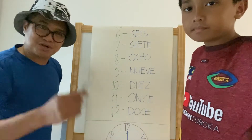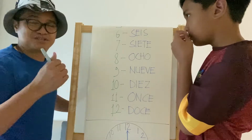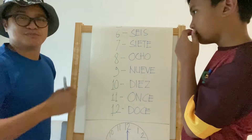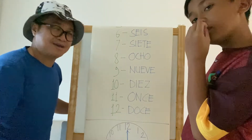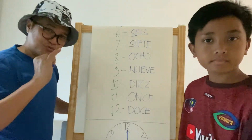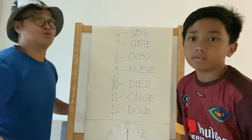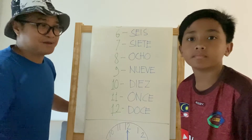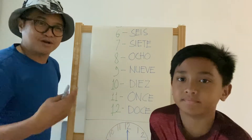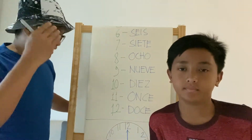We can also count further: 13, 14, 15, 16, 17, 18, 19, 20, 21, 22, 23, 24. You will always be hearing '24 hours' — so those numbers exist too, but for telling time on the clock we only use up to 12.